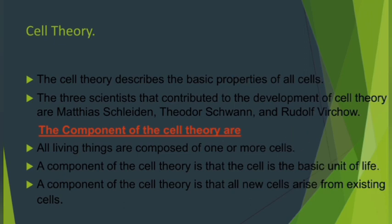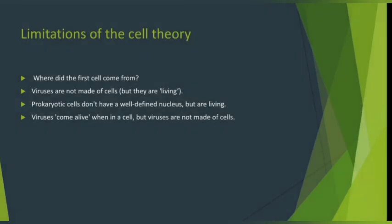The three components of cell theory are: one, all living things are composed of one or more cells; two, the cell is the basic unit of life; three, all new cells arise from existing cells. This cell theory has some flaws or limitations, which we will now discuss.